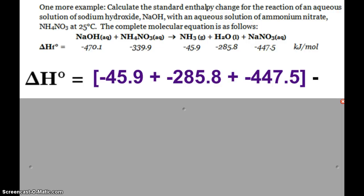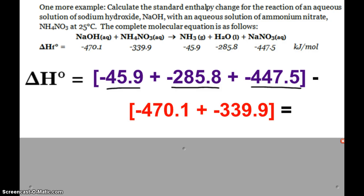So hopefully you found the sum of the products. I've got one ammonia, negative 45.9, plus one water, plus one sodium nitrate. And then I've got one of each of my reactants, one sodium hydroxide and one ammonium nitrate.